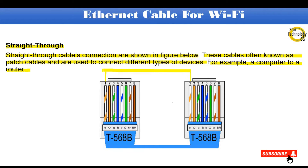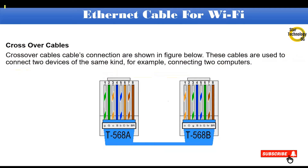In a straight-through cable, the first pin is white-orange and the second pin is orange, and the other side has the same connection. Crossover cables are used to connect two devices of the same kind, for example, connecting two computers. In a crossover cable, one side has a different arrangement of wires from the other side. The first pin is white-green and second pin is green on one side, while the other side has white-orange and orange as the first and second pins.